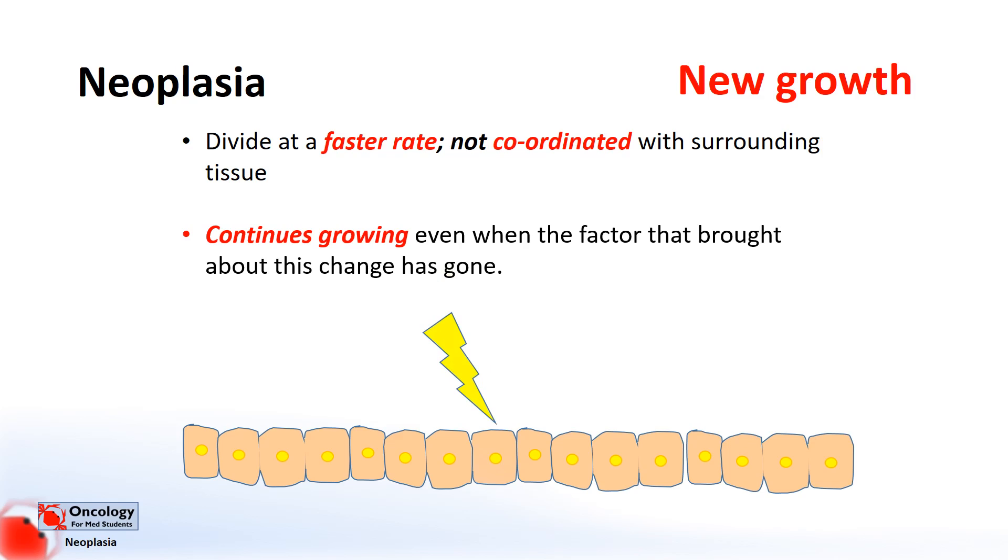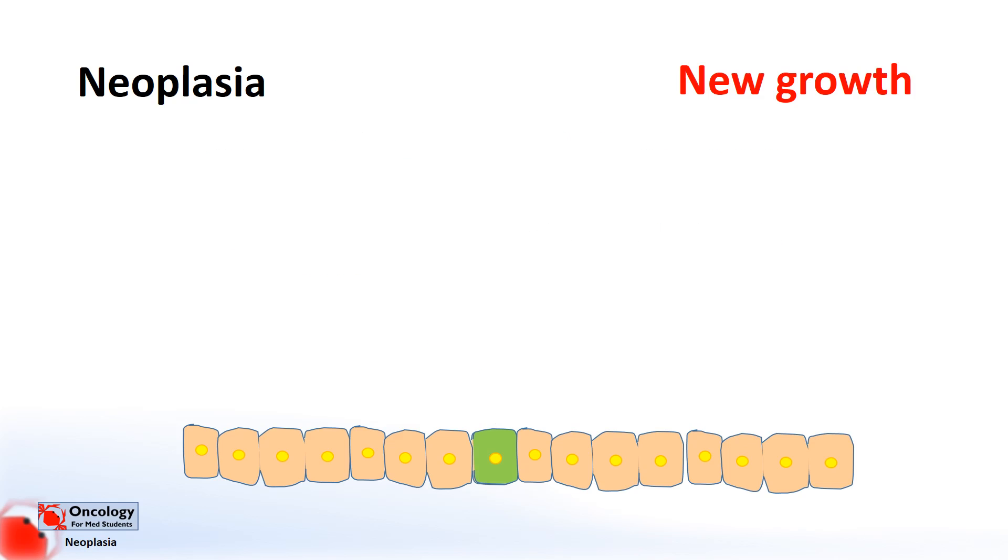So the stimulus could be a countless number of things which we'll discuss in later videos, but for the sake of this demonstration we'll use the example of UV light damaging the skin cells. The damage from the UV light here has caused this cell to become a rogue cell. The cell divides even though the stimulus, the UV light, is gone.